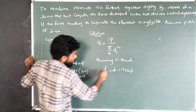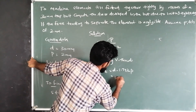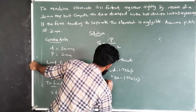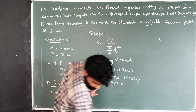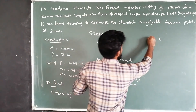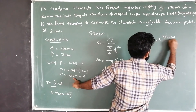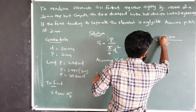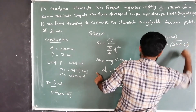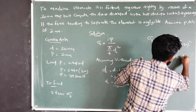The root diameter dc equals nominal diameter D minus 1.732 times pitch P. So dc is equal to 30 minus 1.732 times 2, giving dc equal to 26.536 mm. Substituting into the formula: sigma T equals load divided by (pi by 4 times 26.536 squared), and we get the final answer: sigma T equals 5154.06 N/mm².